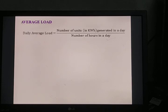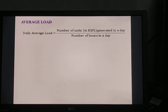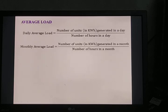Average load is defined as the average of all loads occurring during a period. Depending on the duration, it is represented as daily, monthly, or yearly average load. Daily average load equals the number of units generated in a day divided by 24 hours. Units generated are in kilowatt-hours (kWh). Monthly average load equals units generated in a month divided by the number of hours in a month — 30 days × 24 hours = 720 hours.